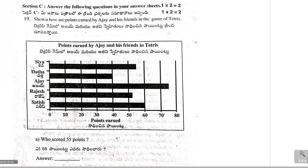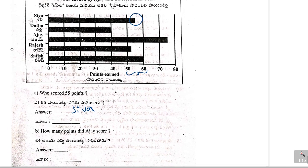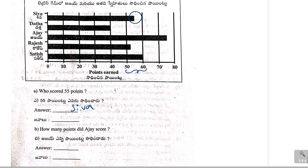Next, last problem, 19th problem. Shown here are points earned by Ajay and his friends in the game of Tetris. Who scored 55 points? You observe in the diagram 55, that means in between 50 and 60. You see here, Shiva. This is in between, exactly in between 50 and 60. Rajesh is also in between 50 and 60, but it is somewhat closer to 50. So, 55 points means exactly at the middle. So, Shiva is there. So, Shiva. Next. How many points did Ajay score? Ajay, this one Ajay. So, it is in between 70 and 80. It may be like 75. So, 75 points Ajay scored.